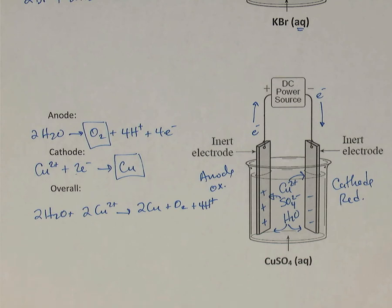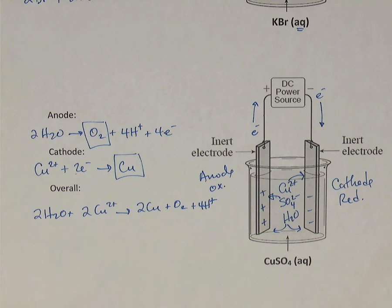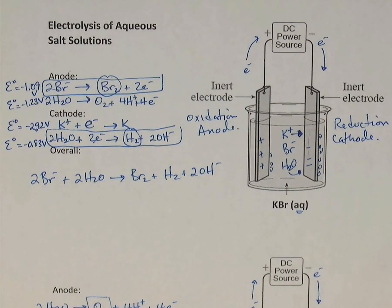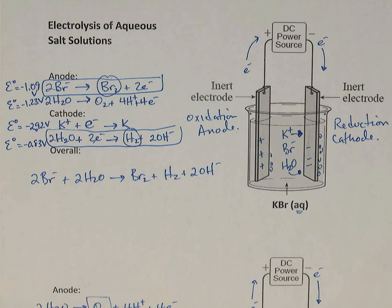To summarize all three types of electrolysis: First, molten salt — cation goes to cathode and is reduced; anion goes to anode and is oxidized. Second, pure water — water is oxidized at the anode to make oxygen; water is reduced at the cathode to make hydrogen. Third, aqueous salt solution — the more complicated case, because at each electrode there are two possible reactions. We choose the reaction with the higher potential: higher oxidation potential wins at the anode, higher reduction potential wins at the cathode.